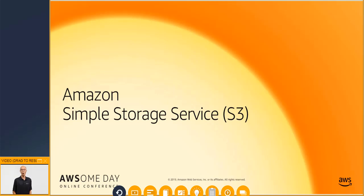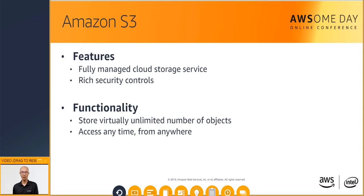We will next take a look at one of our oldest AWS services, Amazon Simple Storage Service, or S3. Amazon S3 is a fully managed storage service that provides a simple API for storing and retrieving data. You don't have to manage any infrastructure yourself and can put as many objects into S3 as you want. S3 holds trillions of objects and regularly peaks at millions of requests per second. Objects can be almost any data files such as images, videos, or server logs. S3 supports objects as large as 5 TB in size.